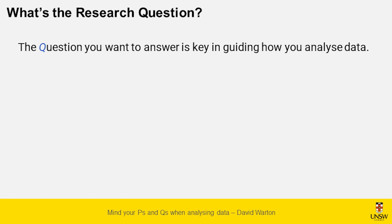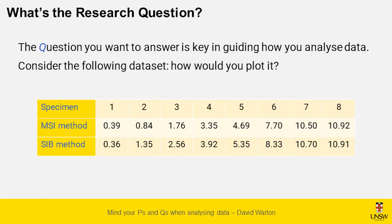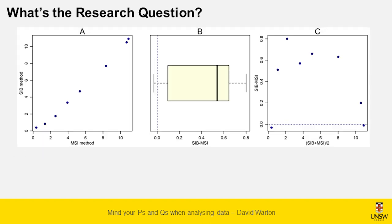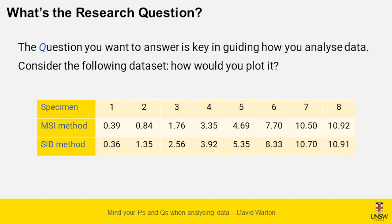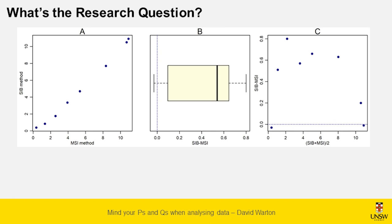As a simple example, let's look at this dataset — I think it's maybe silver chloride concentration. We're trying to estimate something like that and we've got two different methods with eight specimens. Here are a few different plots you could construct over this dataset: a scatter plot of SRB against MSI, a box plot of the differences between SRB and MSI, and a mean-difference plot. How are you going to plot this dataset?